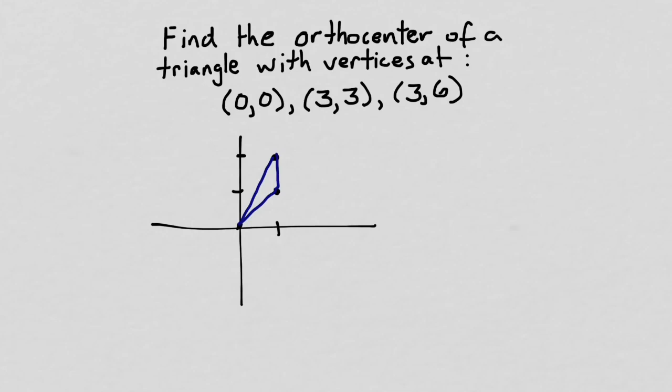Before we get started trying to find the orthocenter, let me point out this is an obtuse triangle. One of the angles is obtuse, and so we know that the orthocenter is going to fall outside of the triangle. It's not going to be inside, but it's going to be outside of the triangle.